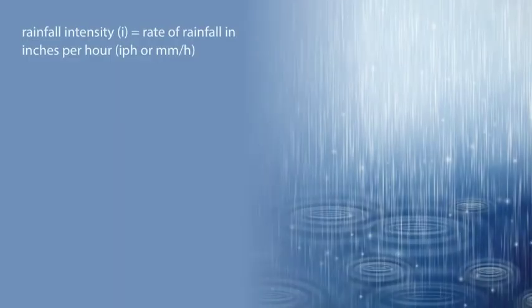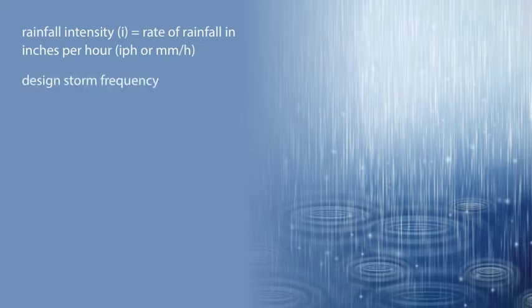Rainfall intensity, I, is the rate of rainfall in inches per hour or millimeters per hour for the design storm frequency and for the time of concentration of the drainage area.